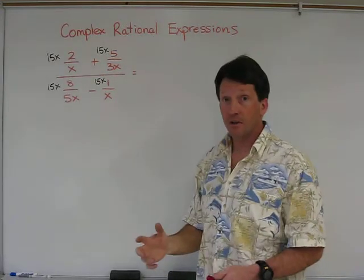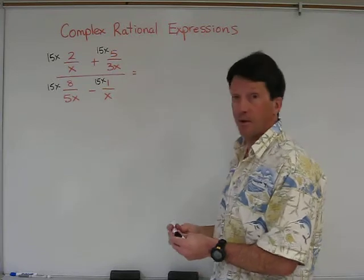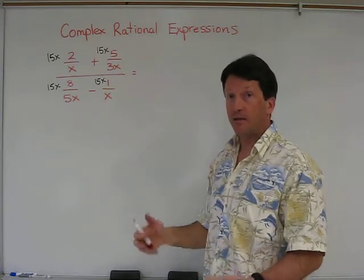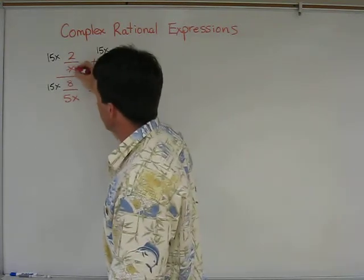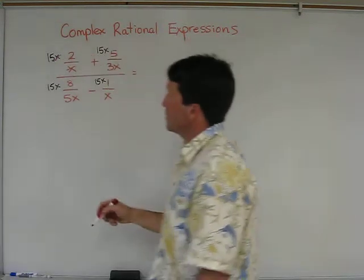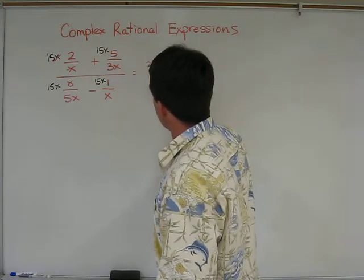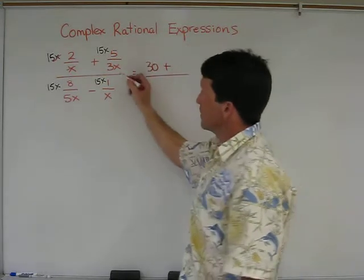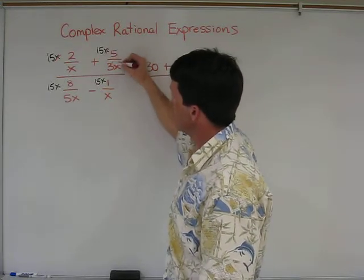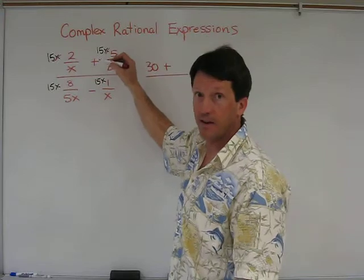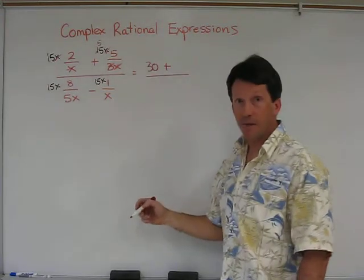Doing so is going to cancel all four of those fractions down. So you just start to go through this systematically. In the top of the fraction, this x will cancel this one, so all you're left with is 15 times 2. Over here, the x cancels, and 3 goes into 15 five times. So you're left with 5 times 5.